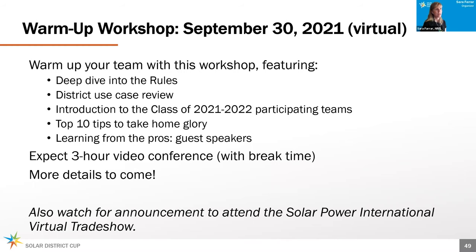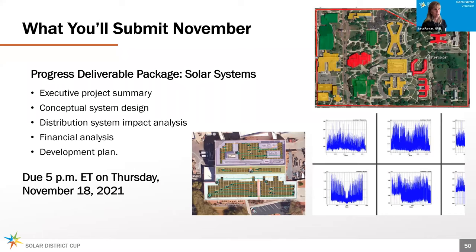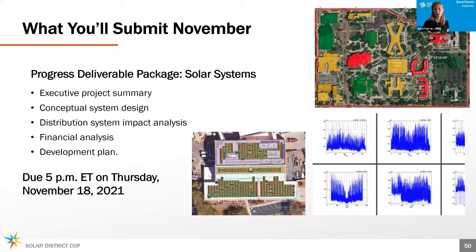You will have a progress deliverable package due November 18th, 2021. In this package, we'll ask you to do a design of proposed solar systems for your assigned district use case. The progress deliverable package will include an executive project summary, a conceptual system design, a preliminary distribution system impact analysis, a preliminary financial analysis, and a preliminary development plan — all five components due by 5pm Eastern Time on Thursday, November 18th.